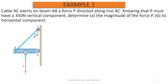Example 1. Cable AC exerts on beam AB a force P along the line AC. Knowing that P must have a 350 Newton vertical component, determine the magnitude of the force P and its horizontal component.